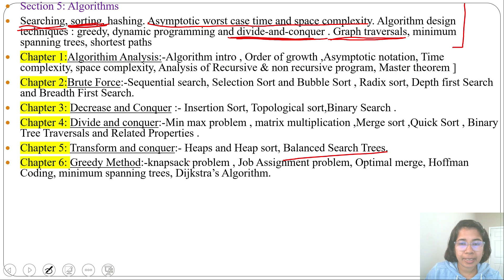Next, Chapter 6: Greedy Method. We are trying to find optimal solution based on current scenario. Knapsack problem, job assignment problem, optimal merge, Huffman coding all comes under greedy technique, then minimum spanning tree, then Dijkstra's algorithm that comes under shortest path. Dijkstra's algorithm is used for single source shortest path.